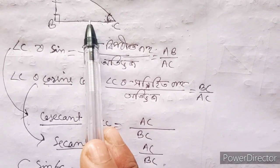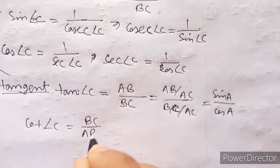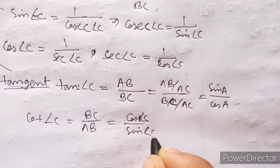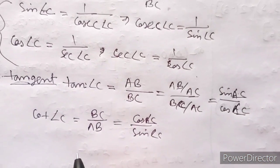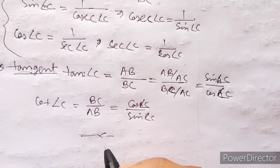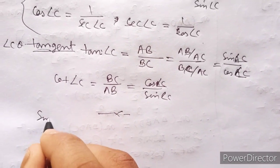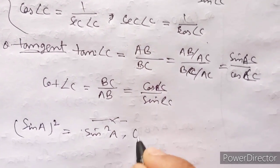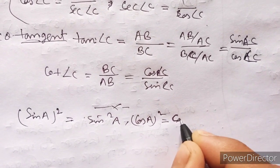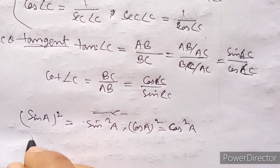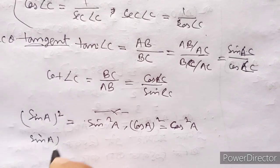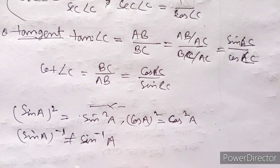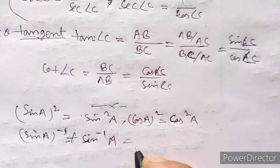So the first one is BC by AB, so it's cos by cos C by sin — it's the C angle. Now, sin A squared is equal to sin square A — it's the same thing. Cos A squared is equal to cos square A — it's the same thing. But sin A inverse is not equal to sin inverse A — that is an important distinction.